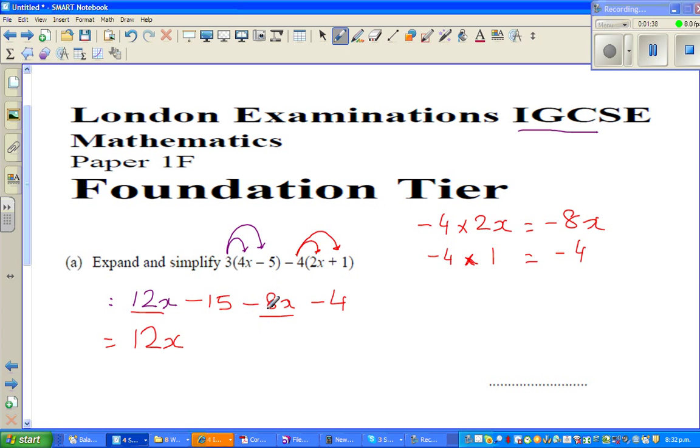8x here. This minus is not with 15, but this minus goes with 8. These two remain together, so it's minus 8x, then minus 15 minus 4. These two are called like terms. You can simplify like terms, that means you can add or take away like terms.